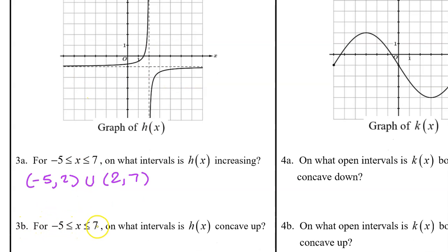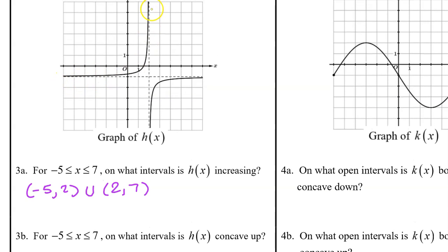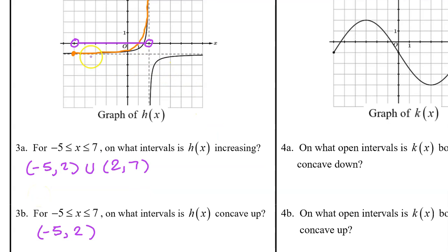3b. For the closed interval from negative five to seven, on what intervals is h of x concave up? The first branch is concave up, while the second branch is concave down. We respect the interval given in the directions, starting at negative five and going to the asymptote. Focusing on input values only, h of x is concave up on the interval from negative five to two.